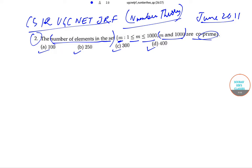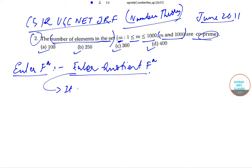M is greater than or equal to one and less than or equal to 1000, and m and 1000 are co-prime. So for this we'll use the Euler function. Now what is the Euler function? It is also known as the Euler quotient function.